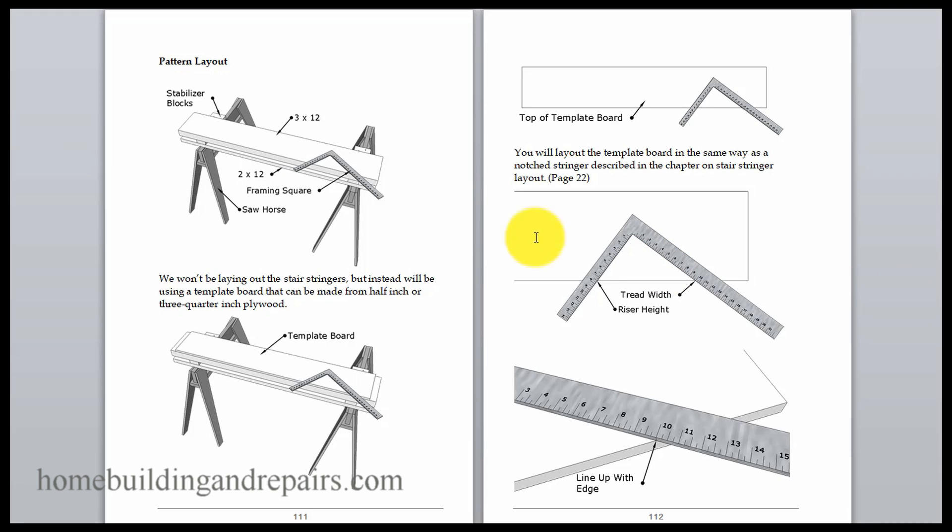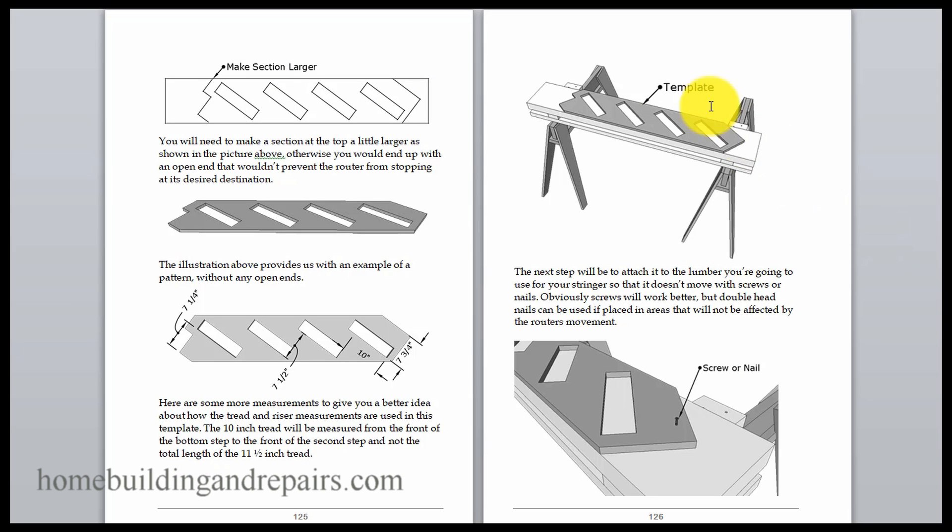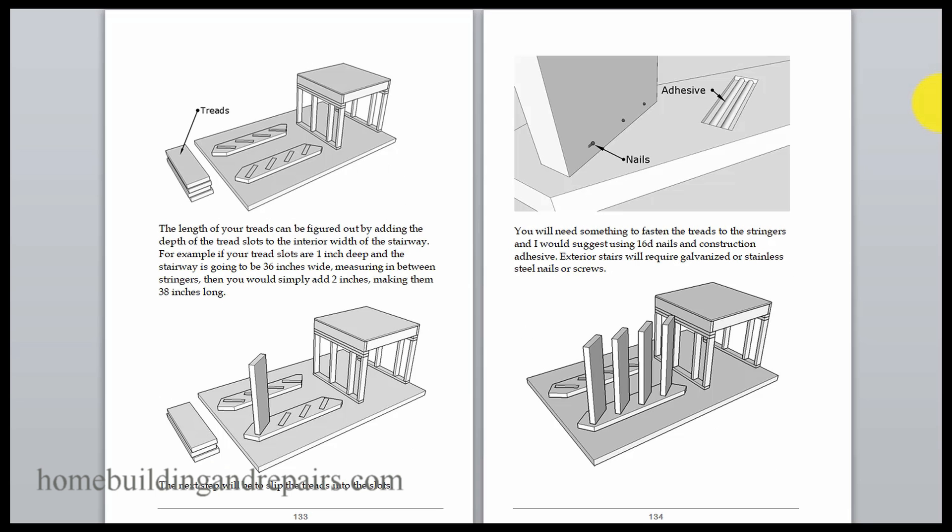Now this is where the book starts. You will learn how to lay out the template, which is going to be the board that you will be using to router out the individual treads. And of course after the template is done, you'll simply attach it to a stringer, router it out, then nail it together, lift it into place, and you are done.